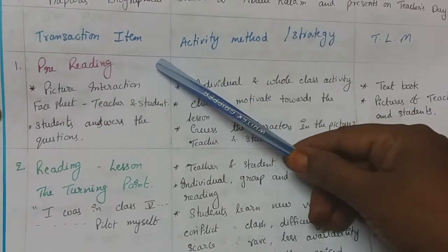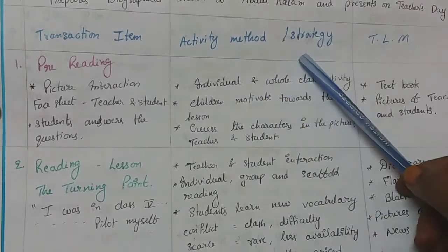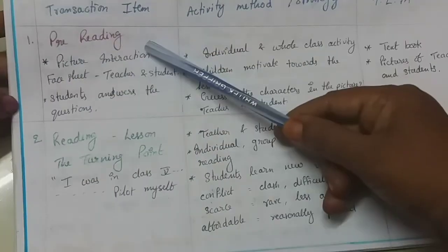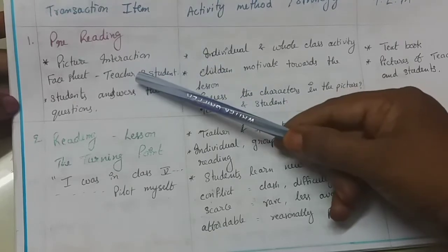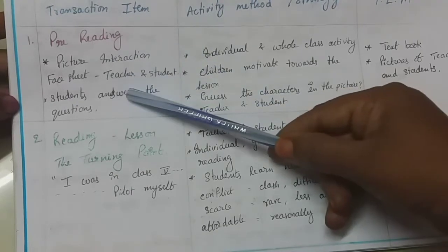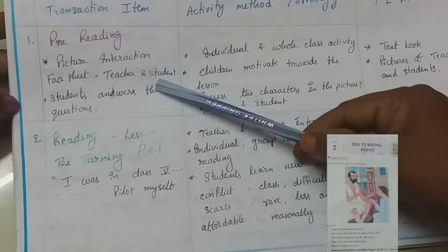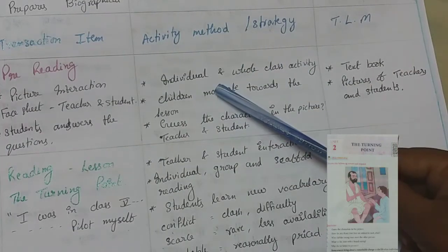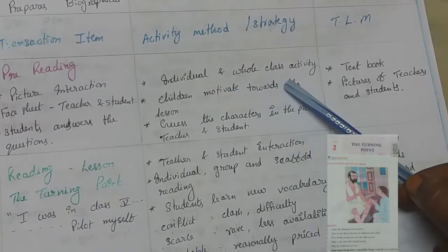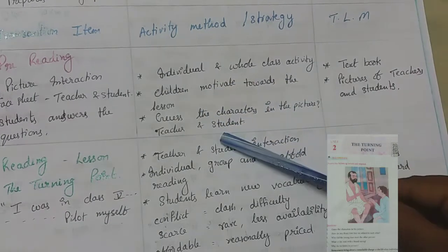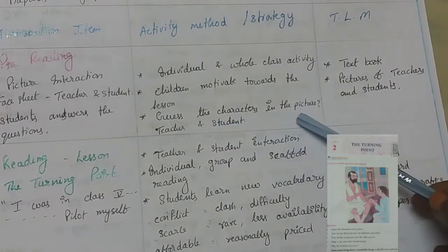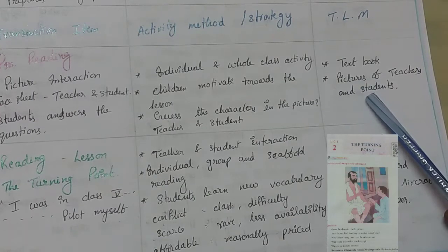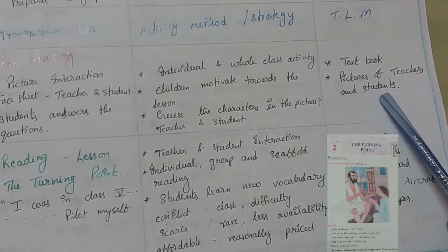The lesson plan covers transaction items, activity methods or strategies, and TLM by period number. In the first period, we have the pre-reading part, the phase sheet or trigger sheet. It involves picture interaction, teacher and student interaction, and students answering questions. It is an individual and whole class activity where children are motivated towards the lesson, guessing characters in a picture as a teacher and student. TLM needed: textbook and pictures of teachers and students.